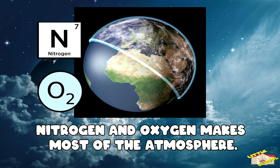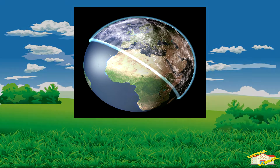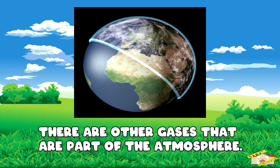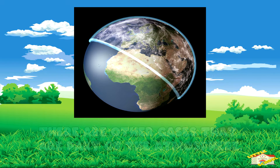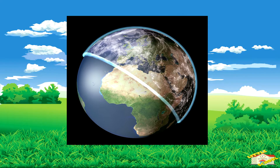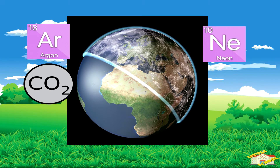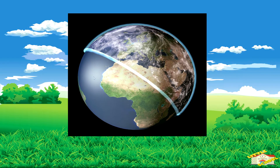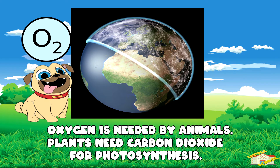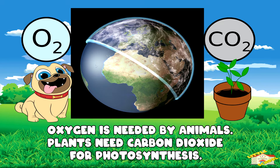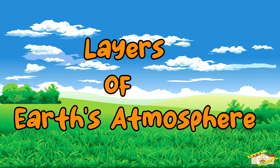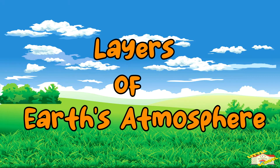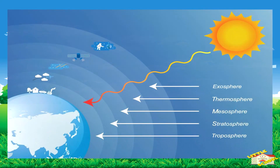The atmosphere is made up of mostly nitrogen and oxygen. There are lots of other gases that are part of the atmosphere but in much smaller amounts. These include argon, carbon dioxide, neon, helium, hydrogen, and more. Oxygen is needed by animals to breathe, and carbon dioxide is used by plants in photosynthesis.